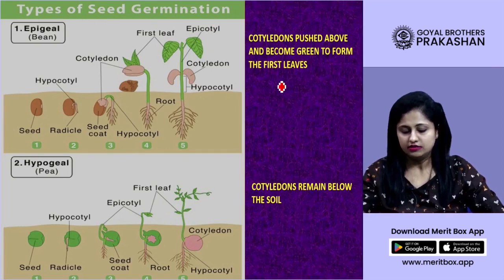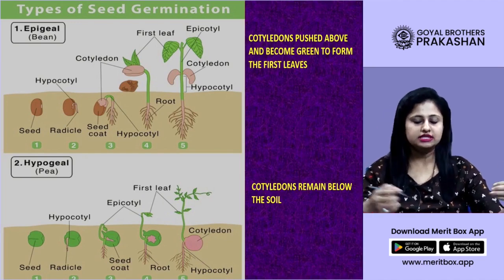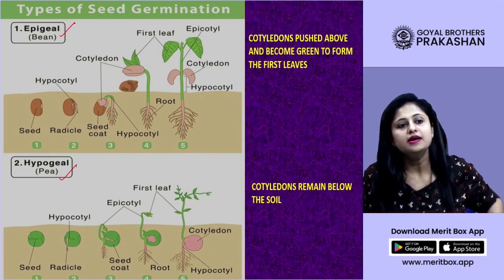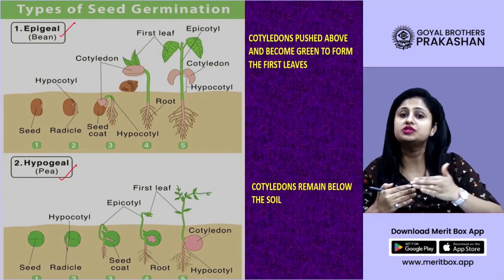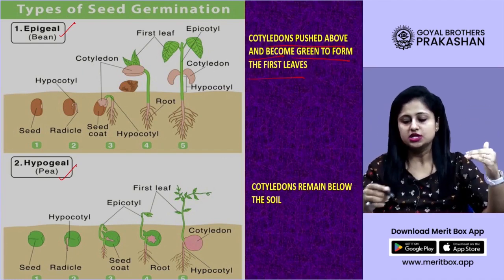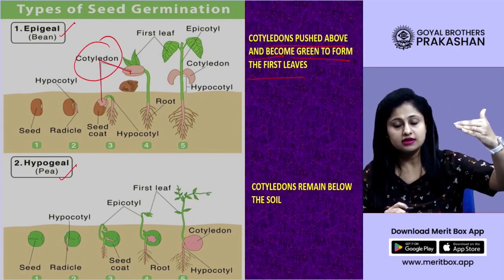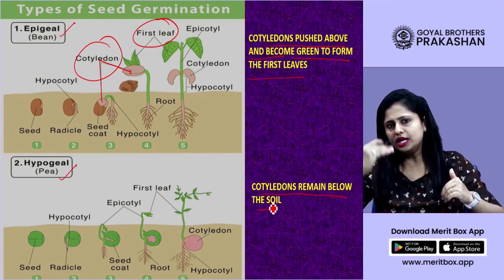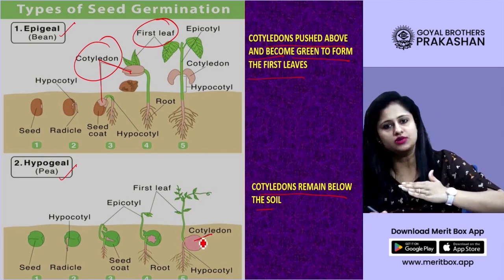Types of seed germination with a diagram: epigeal germination is shown by a bean seed and hypogeal germination is shown by a pea seed. The basic difference is that in epigeal germination, cotyledons are pushed above the ground surface and become green to form the first leaves. In hypogeal germination, cotyledons remain below the soil.